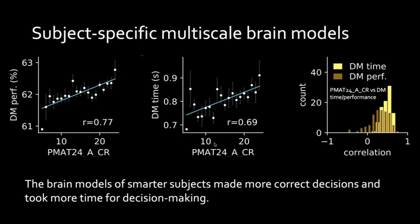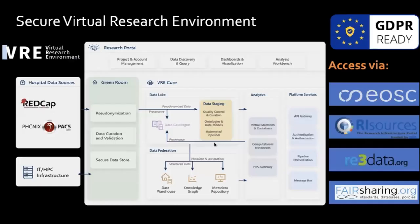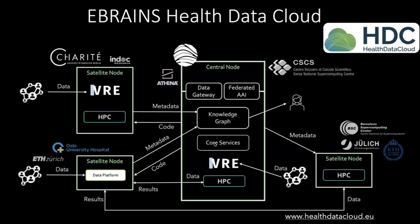After this scientific interlude, let's switch back to our research ecosystems and data platforms. We can find out highly personal aspects about humans with brain research — therefore we need to protect the data. We do this with the virtual research environment and the health data cloud, which will use instances of this VRE installed at different sites.